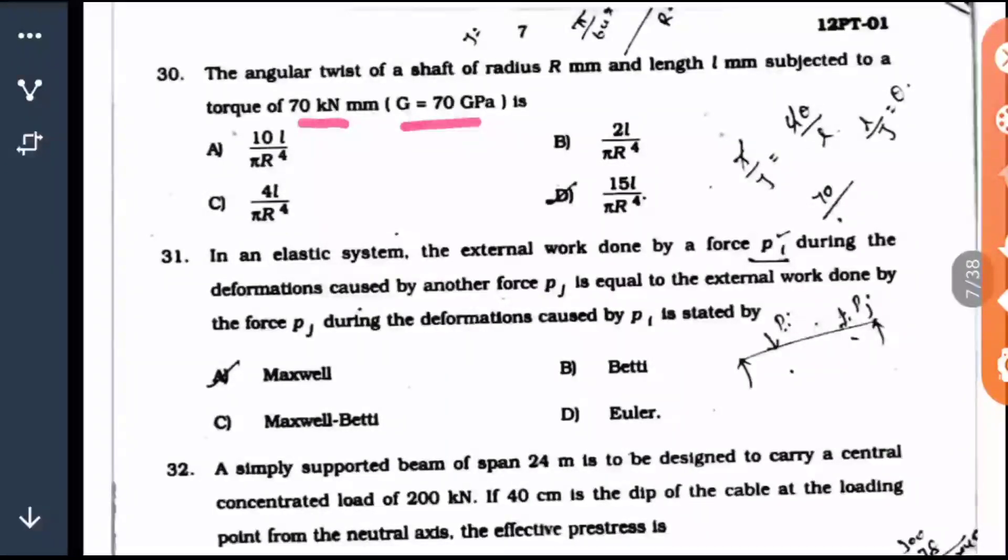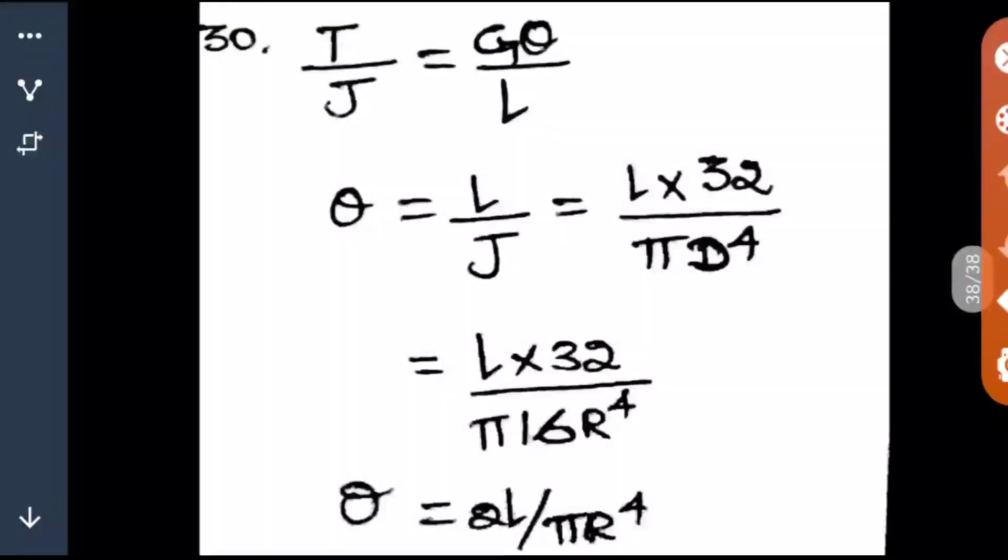We can keep it like that so it's easy to cancel these values as both values are 70. Let's keep both at 70 GPa. The formula is T by J equals G theta by L. As I told you, T and G have the same value so you can neglect both. Theta equals L by J. L we can keep the same and J we can write as pi D to the power 4 by 32.